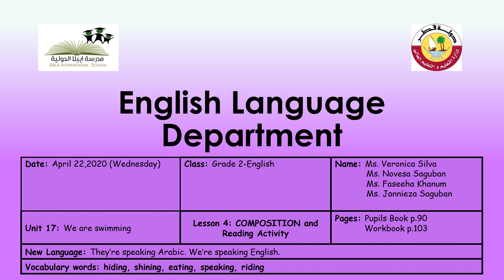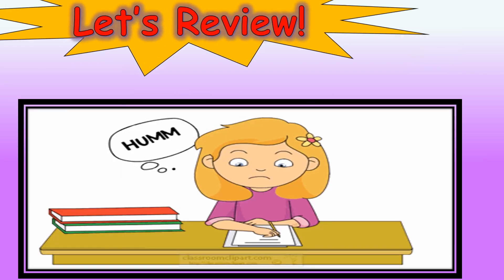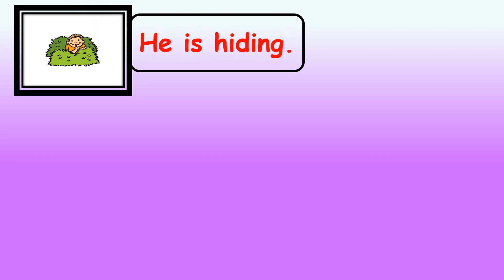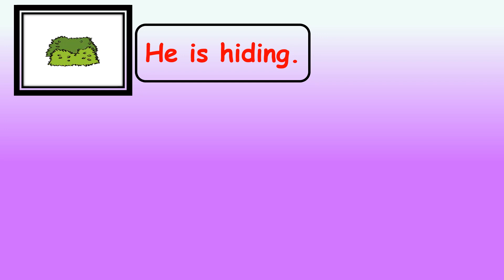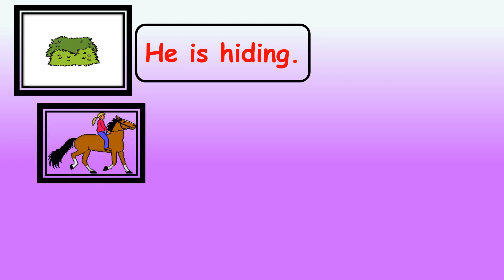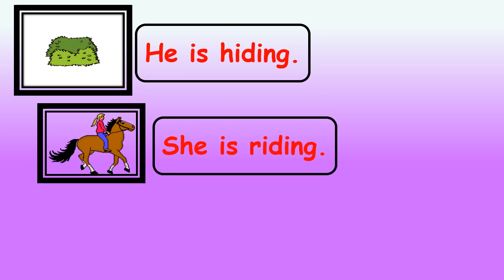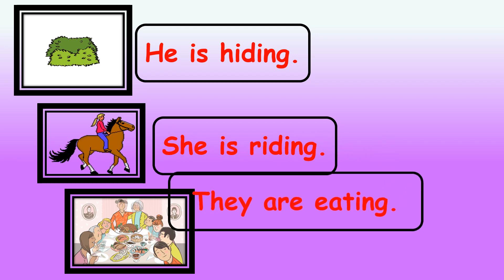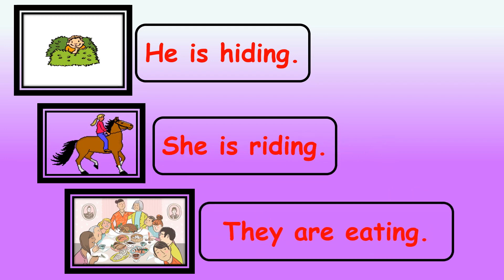Before we start our lesson, let's have a review. Look at the first picture — what is he doing? He is hiding. How about the second picture? What is she doing? She is riding. And the last picture — what are they doing? They are eating.